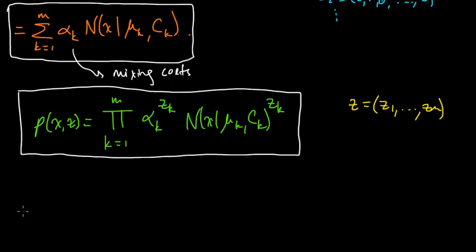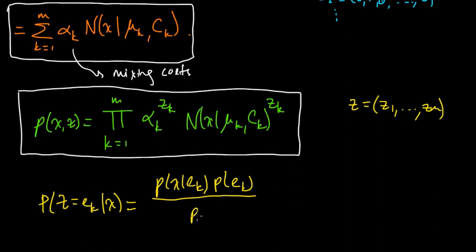Okay, so one other formula which will be useful for us. So let me write down the probability that Z equals EK, or rather, given X, this conditional probability, we can use Bayes' rule. So let me just write it this way. Probability of X given EK. That is, the probability of X given that Z equals EK times the probability of EK divided by the probability of X.